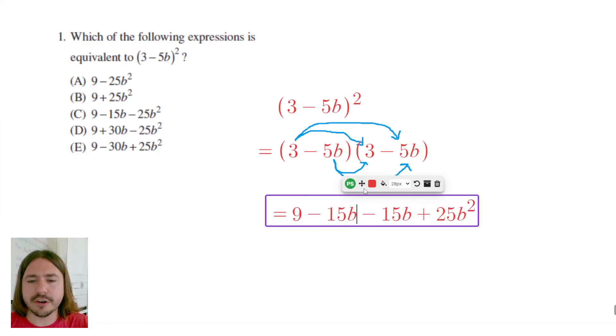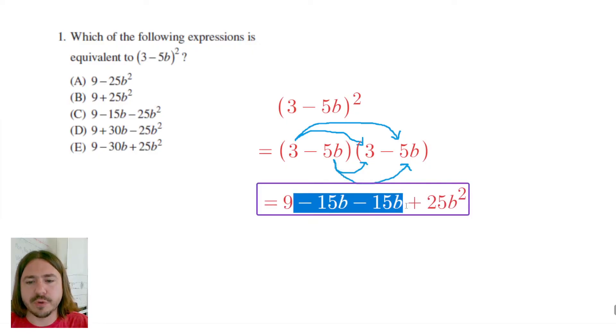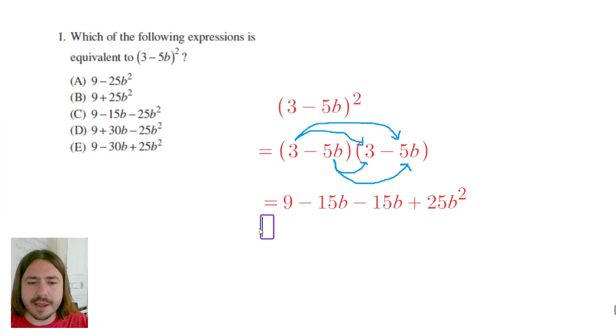Now we're not quite done here yet. As you can see, we do have two like terms - we've got the negative 15b twice, and so we can combine those. So when we combine our like terms, we've got negative 15b minus 15b, which is going to be negative 30b. And we end up with this expression: 9 minus 30b plus 25b squared.